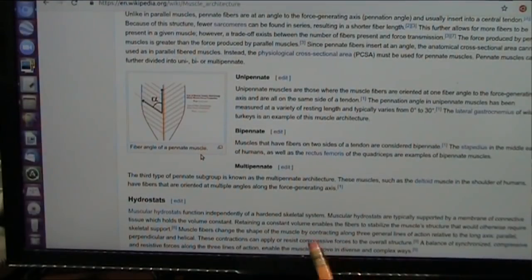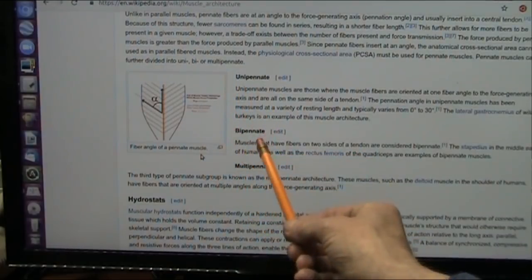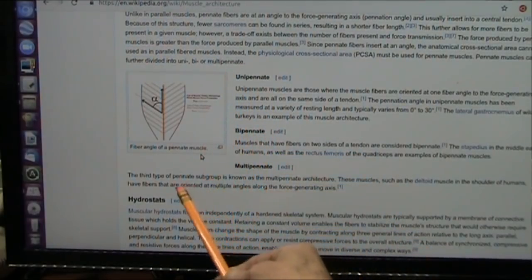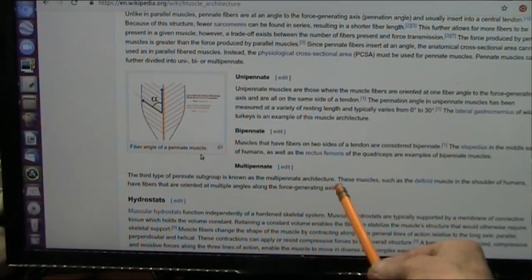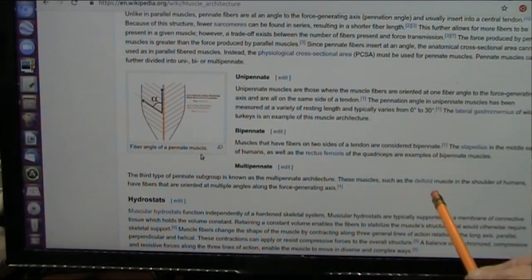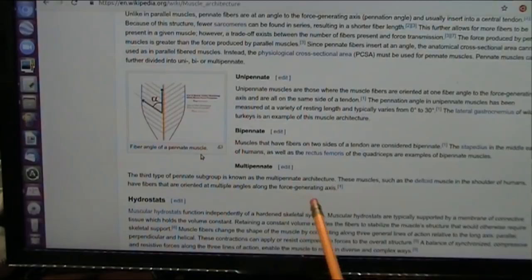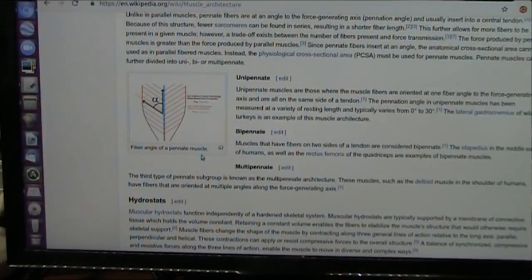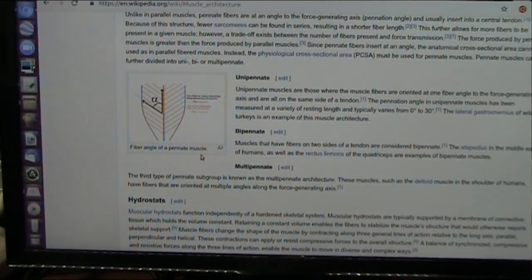This is the only one that I'm worried about is a multi-pennate. A multi-pennate architecture, these muscles, such as the deltoid muscle in the shoulder of humans, have fibers that are oriented at multiple angles along the force-generating axis. I still got to look at it to be positive, but I think we're on solid ground with feathers.